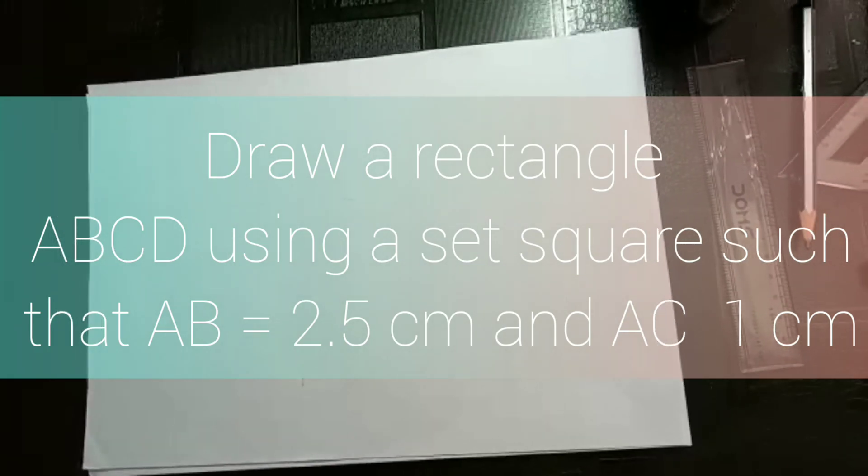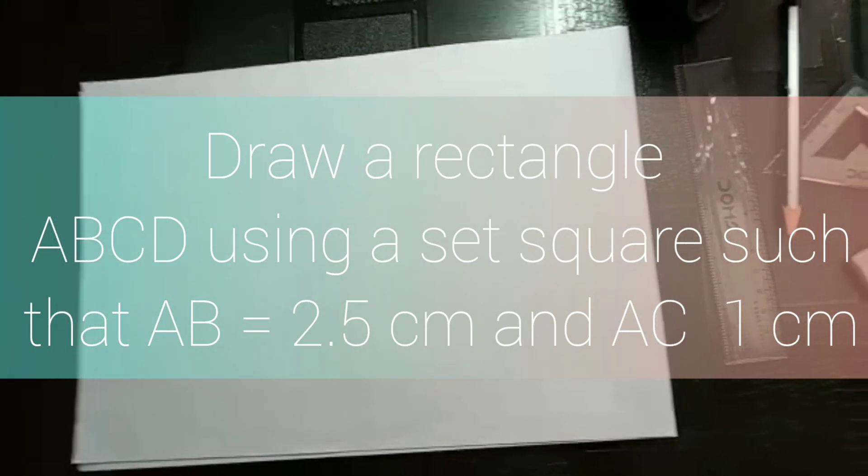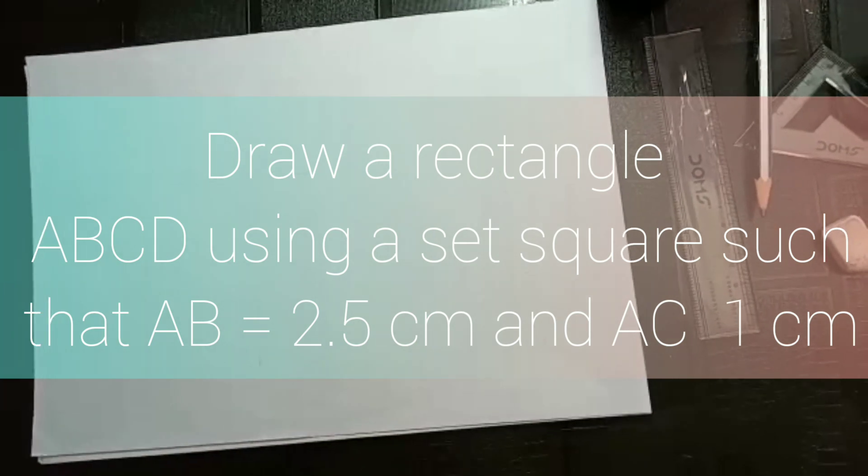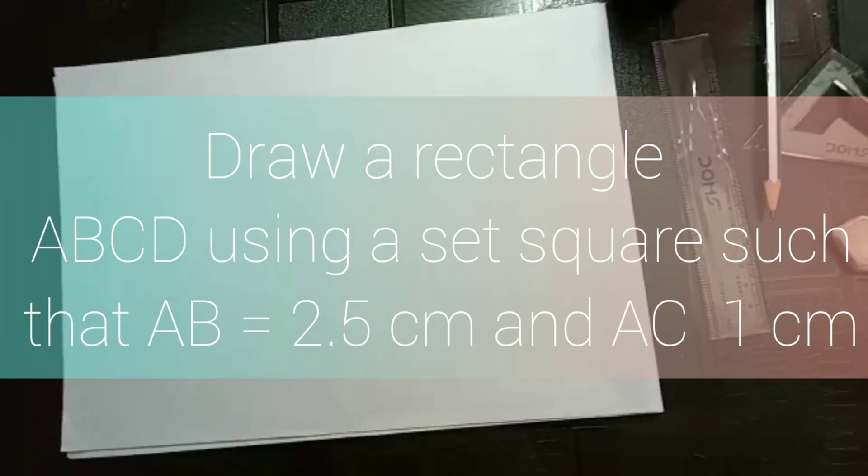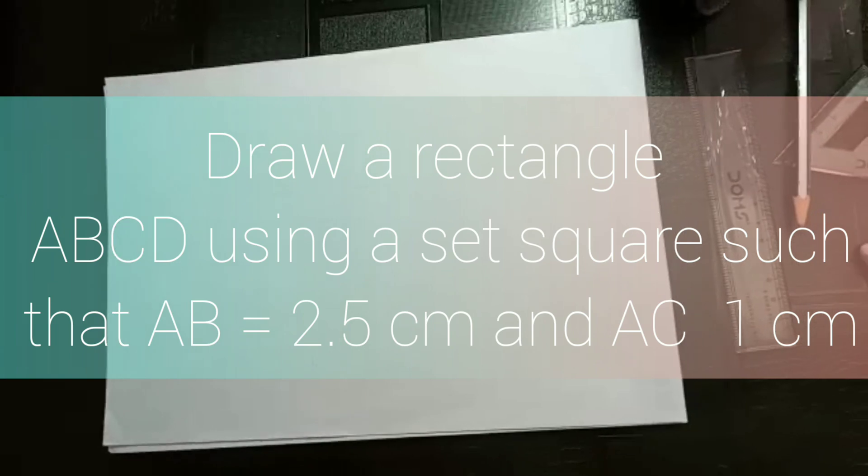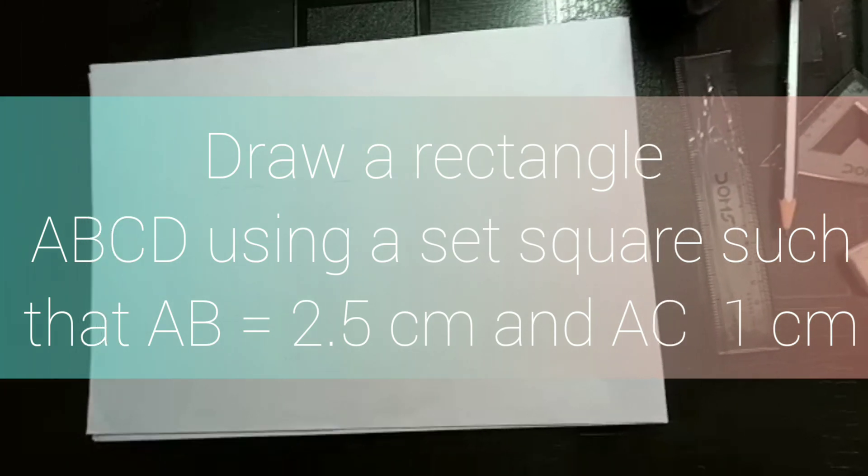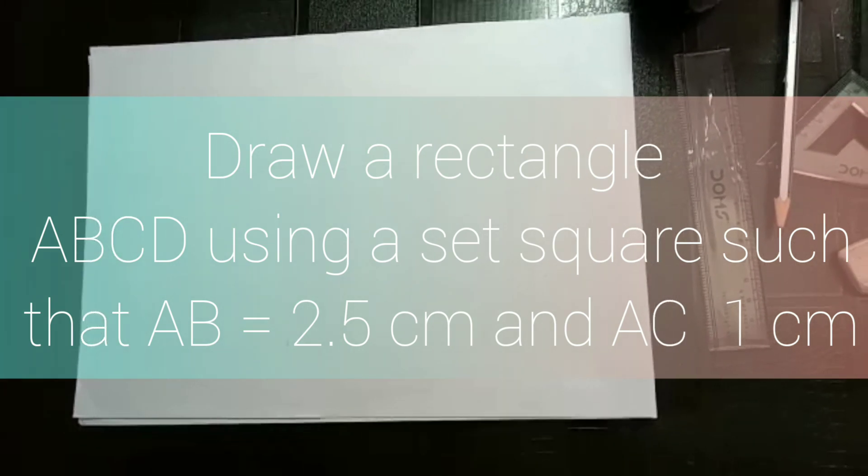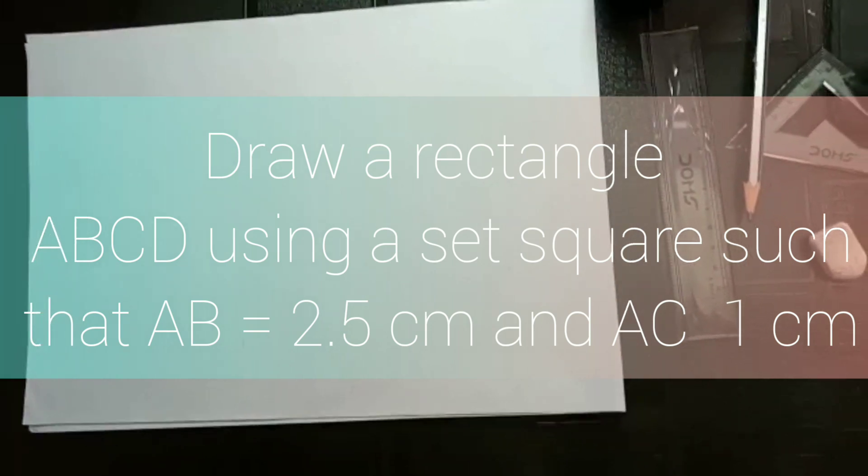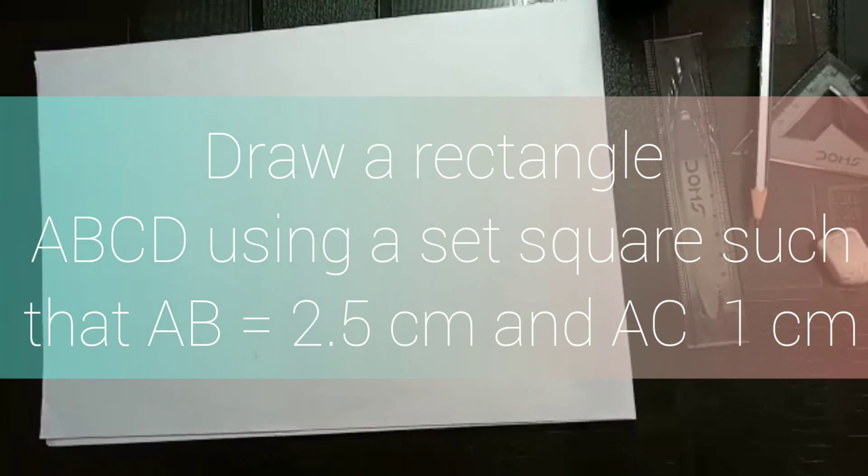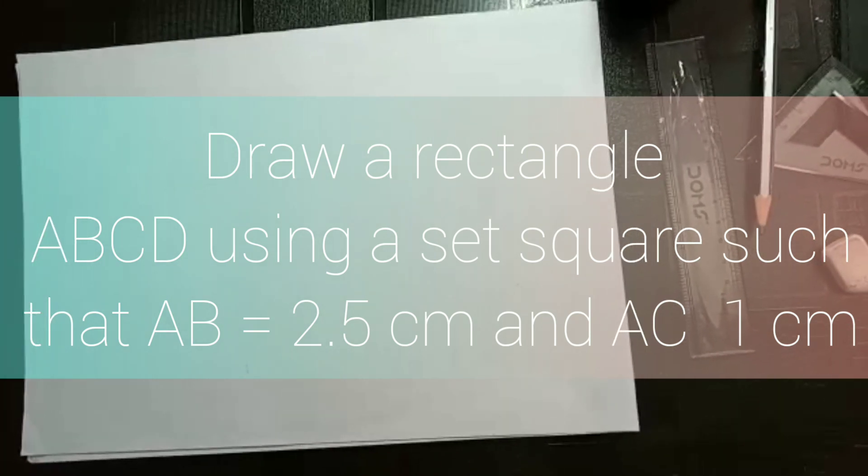Namaste children. Today I am going to show you how to construct a rectangle using a set square. So the question is, draw a rectangle ABCD using a set square such that AB is equal to 2.5 cm and AD is equal to 1 cm.